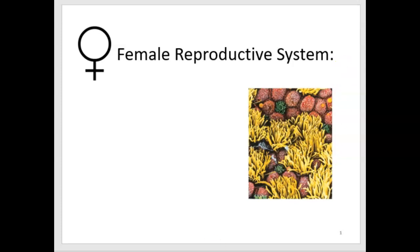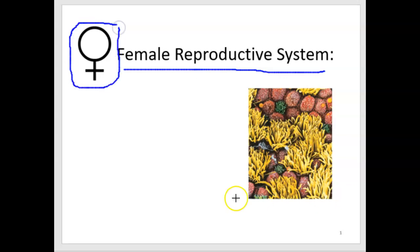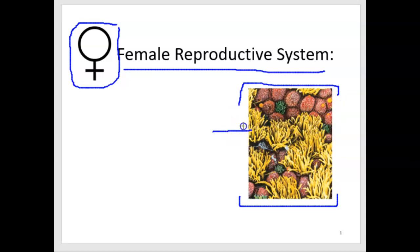Hello, this is Gina Piscitelli with the first lecture for the Female Reproductive System in Anatomy and Physiology II. This introductory slide shows the symbol for females on the left, and the picture is of the fallopian tubes. You can see that some of the cells have cilia, shown as yellow here. The cilia move the fluid present in the peritoneal cavity, which helps propel the oocyte, or ovum, into the fallopian tubes.